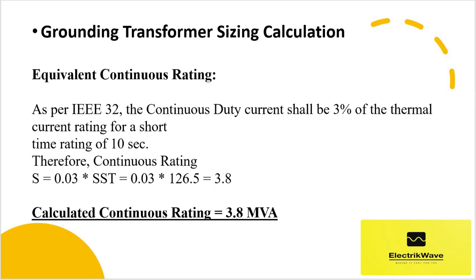As per IEEE 32, the continuous duty current shall be 3% of the thermal current rating for a short time rating of 10 seconds. Therefore, continuous rating S = 0.03 × Sst, which comes out to 3.8 MVA. Hence, the calculated continuous rating is 3.8 MVA.